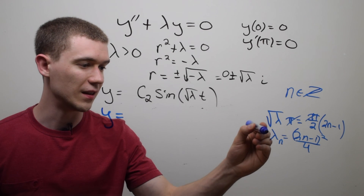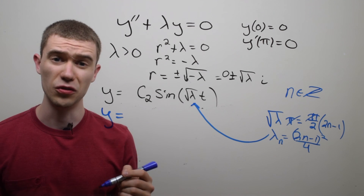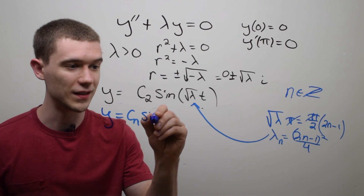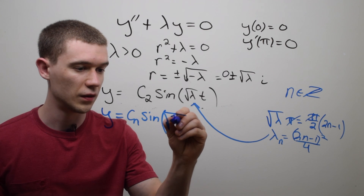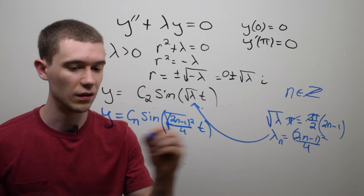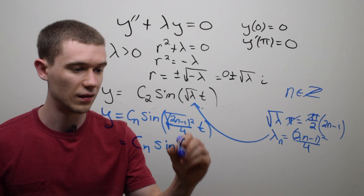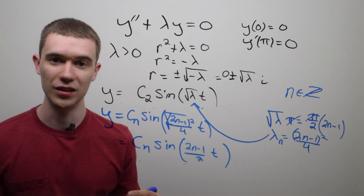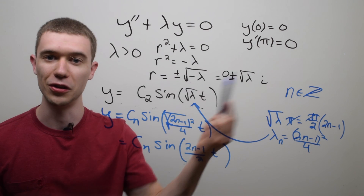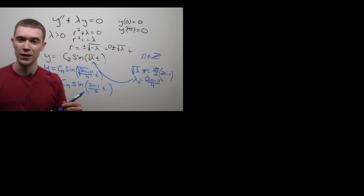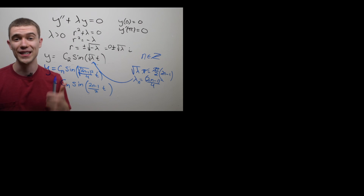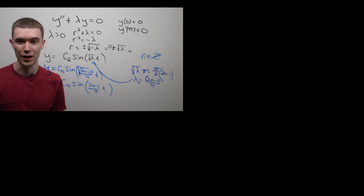The actual eigenfunction is found by plugging this λ back into the equation. I never solved for c₂ explicitly, so I'll just call it cₙ. The eigenfunction is yₙ = cₙ sin((2n−1)/2 · t), associated to the eigenvalue λₙ = ((2n−1)/2)² for this differential equation with these boundary conditions. Hey, I hope you got something out of this video. Remember there are three cases to check, but only λ positive gives a non-trivial result. Please give it a thumbs up and subscribe — have a fantastic day!